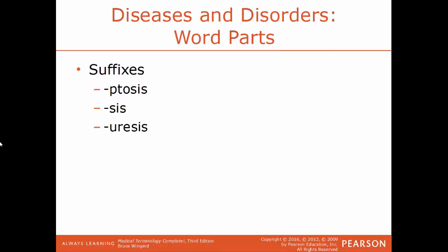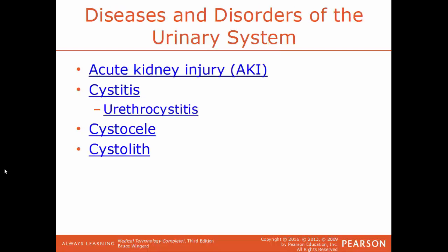Now I'll talk about some particular diseases and disorders of the system. AKI, acute kidney injury, is a condition where there's a very sudden decrease in kidney function — sometimes called acute renal failure. Cystitis is the inflammation of the urinary bladder. If that inflammation spreads to the urethra, it's classified as urethrocystitis.